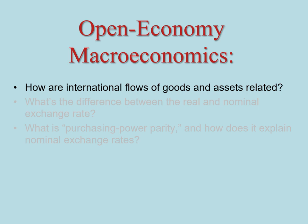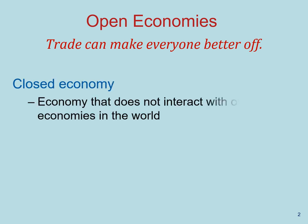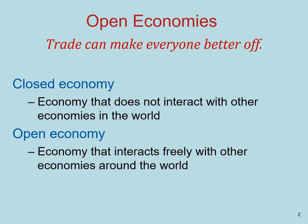In this video, let's talk about how international flows of goods and services and assets are related. One of the basic principles of economics is that we can trade and make everybody better off. When you specialize, you become more productive. When other people specialize, they also become more productive. If we trade together, we're able to make and consume more goods and services than if each was trying to make everything alone.